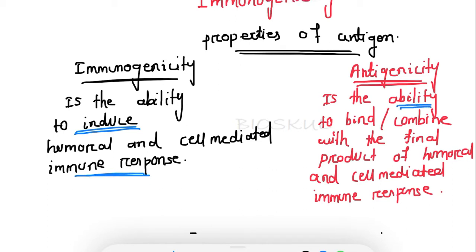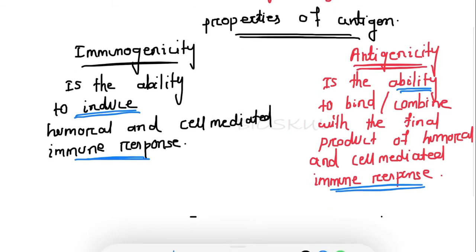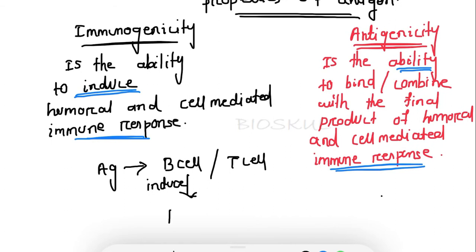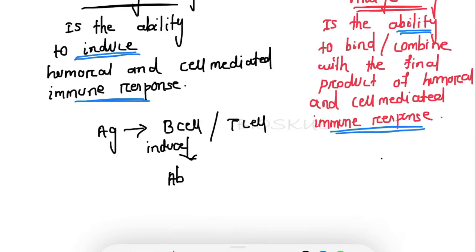Antigenicity is the ability to bind with the final product of immune response. If there is an antigen, it can induce the B cell — humoral immunity — or T cell — cell-mediated immunity — to generate the immune response. The B cell will produce antibody. In antigenicity, the antigen binds to the final product of immune response, which is the antibody.